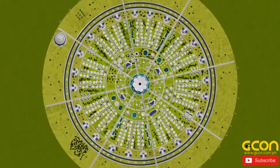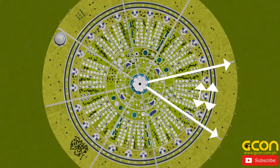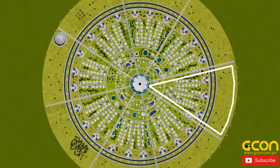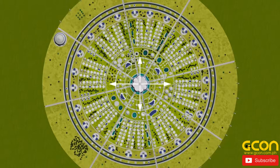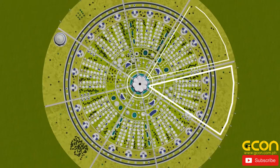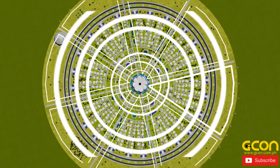A circular city is most practically divided via pathways into areas known as radial sectors and circular belts, also known as circulars or rings. The radial sectors separated by pathways are subdivided by circular belts also separated by pathways, which extend outward from a central point forming a widening circular grid structure.